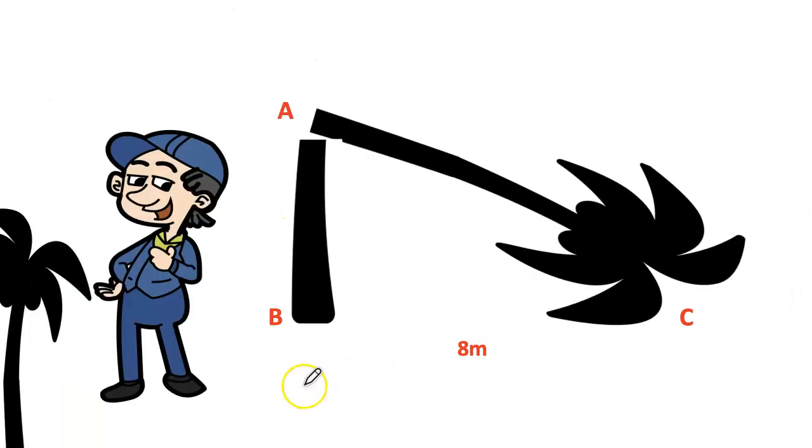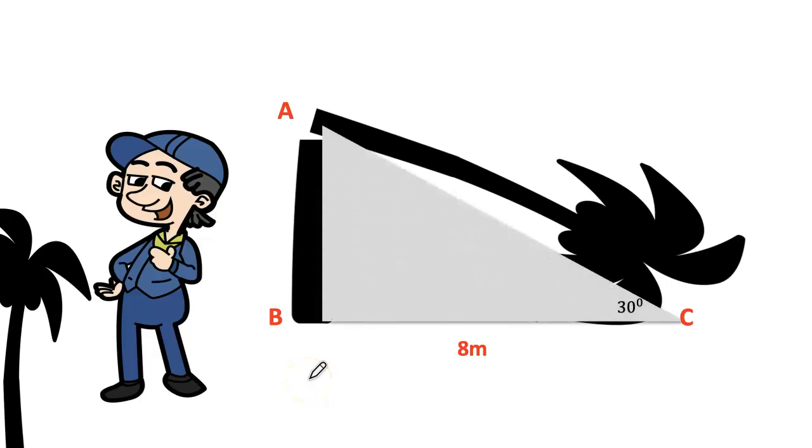To find the height of the tree, let us draw a right angle triangle. Here, the broken part is AC and the remaining part is AB. The distance between the foot of the tree to the top which touches the ground is BC is 8 meter and angle 30 degree.